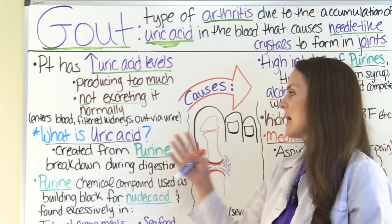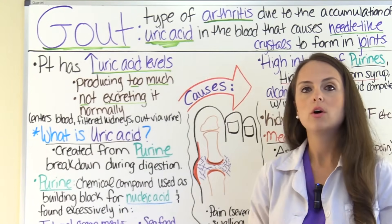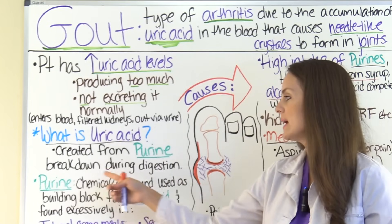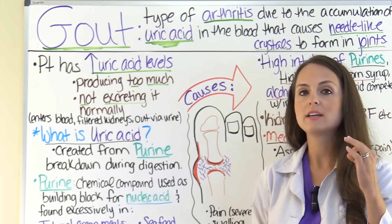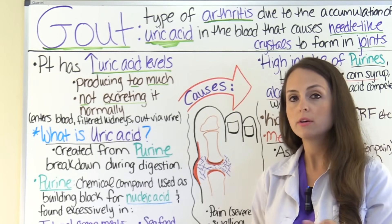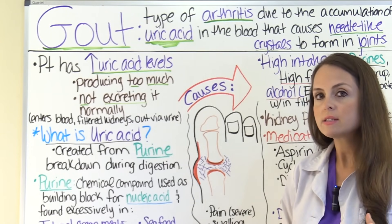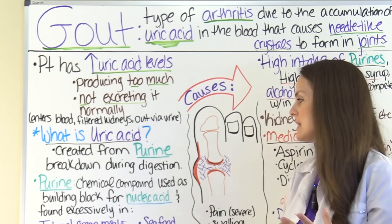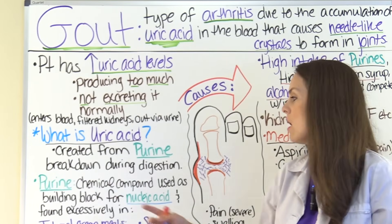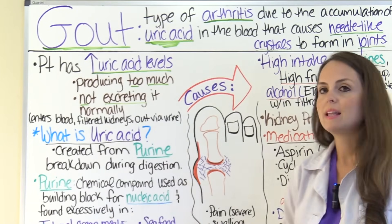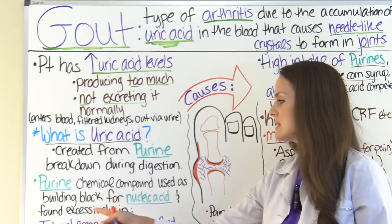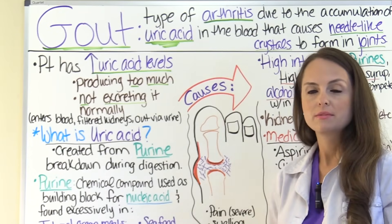So what exactly is uric acid? Uric acid is created from purine breakdown during digestion — it's a byproduct from purine breakdown. Now what is purine? Purine is a chemical compound used as a building block for nucleic acid, like your DNA and your RNA. And it is found excessively in the following foods.